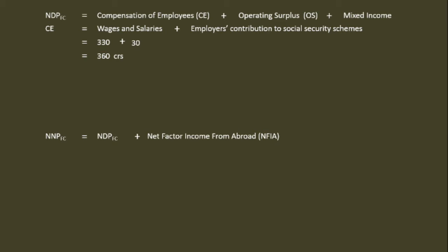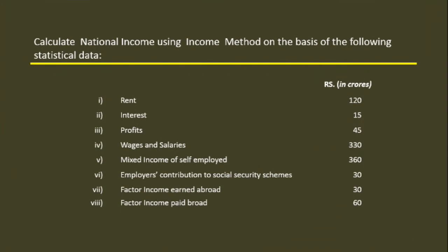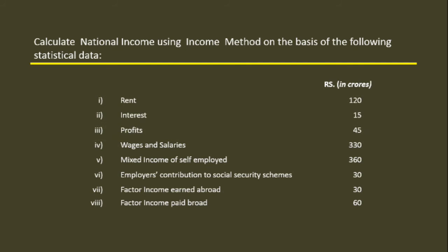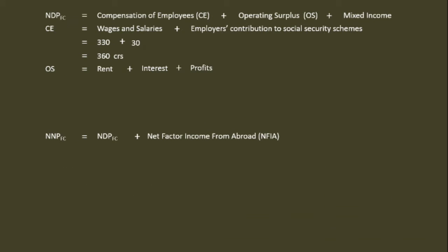Operating surplus is also not given explicitly. We have to calculate it from Rent, Interest, and Profit. Operating surplus is equal to Rent plus Interest plus Profit. Rent is 120 crores, Interest is 15 crores, Profit is 45 crores. So 120 plus 15 plus 45 equals 180 crores.